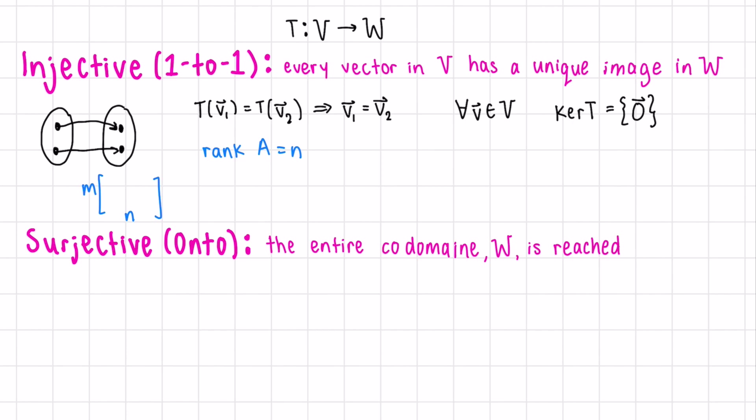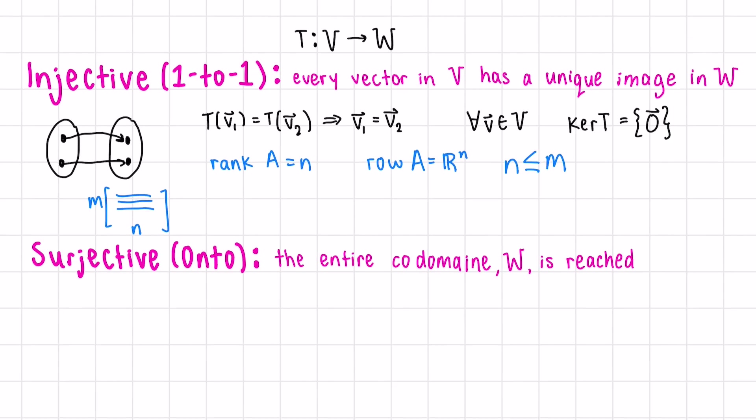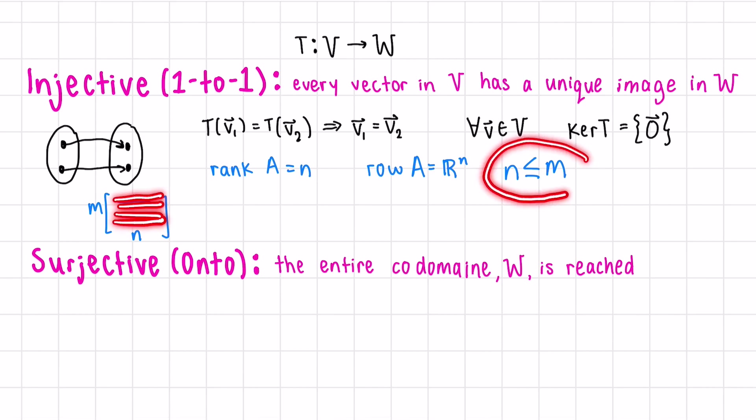Or equivalently, if the row space of the matrix of the transformation is Rn. Just a reminder, the row space is the span of the rows in our matrix. We would need at least N vectors, so there has to be at least N rows, if not more. This is where we get that N is equal to or less than M.